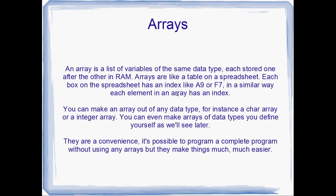And in exactly the same way, each item in an array has an index as well. A spreadsheet would actually be a two-dimensional array, which we're not going to go into, but it's the same sort of idea. You can make an array out of any data type you like — a char array, an integer array, a bool array, a float, a double array, anything you want. Even later on, when we get to making our own data types, you'll see that you can quite easily define arrays of the data types that you've invented yourself. Arrays are a convenience more than anything.